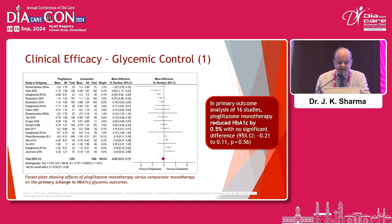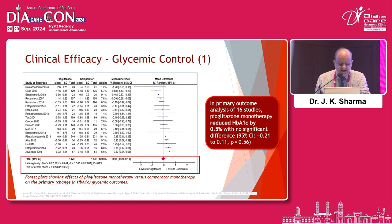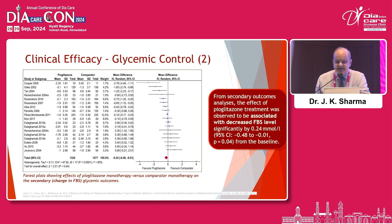Regarding clinical efficacy and glycemic control: in a primary outcome analysis of 16 studies, pioglitazone monotherapy reduced HbA1c by 0.5% with no significant difference. From secondary outcome analysis, the effect of pioglitazone treatment was associated with decreased fasting plasma glucose, significantly by 0.24 mmol per litre.